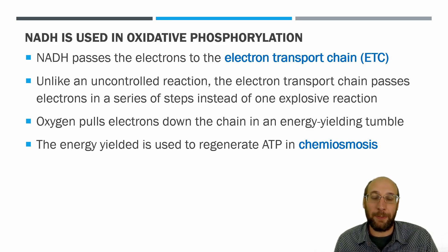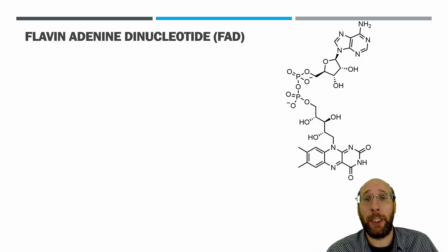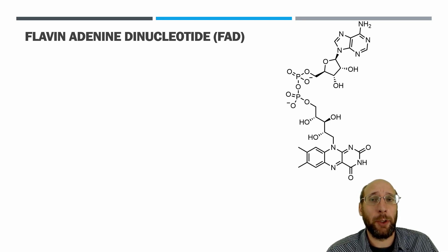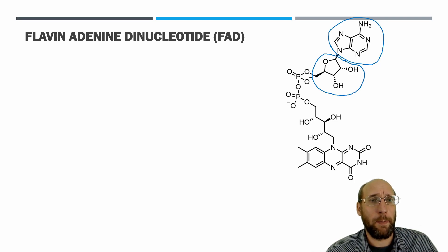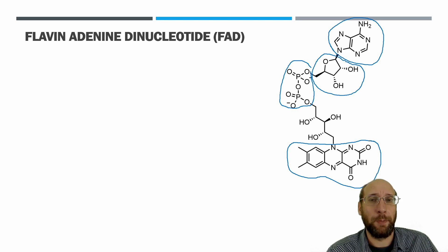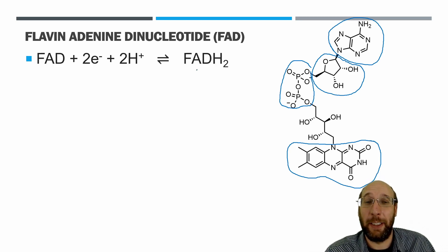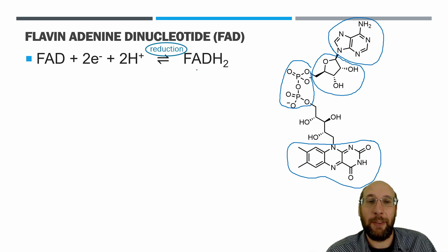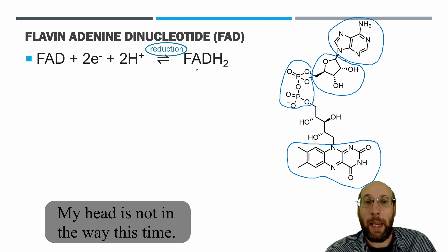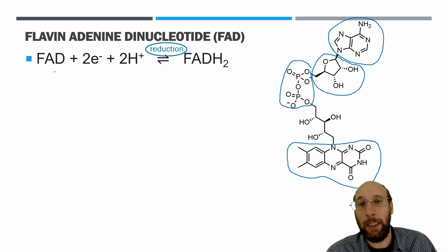The energy from the electron transport chain is yielded in the final step called chemiosmosis, where ATP is made. There's also another energy-carrying coenzyme called flavin adenine dinucleotide, or FAD. FAD has a similar structure to NAD — it has an adenine base, a ribose sugar, two phosphates, and a flavin side chain. When FAD gains two electrons and two hydrogens it becomes FADH₂ — that's reduction. When FADH₂ loses electrons and becomes FAD, that's oxidation.